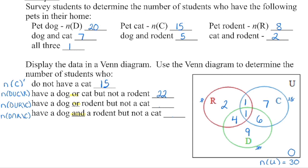The next one is similar — dog or rodent, but not cat. Dog or rodent covers those two circles. But if we take off everything in the cat circle, it leaves us with just those three sections: 2 plus 4 is 6, plus 9 is 15 students that would fit into that category.